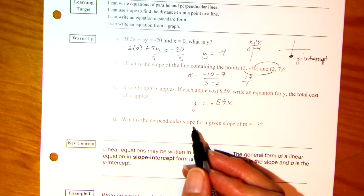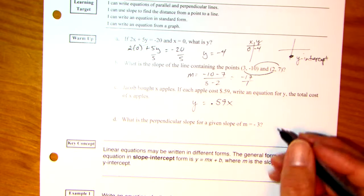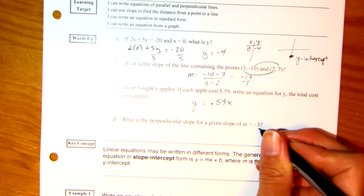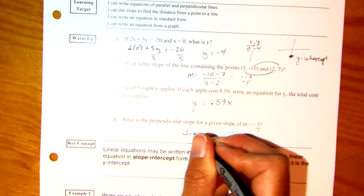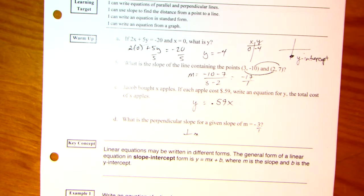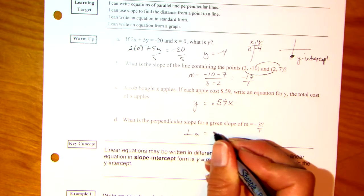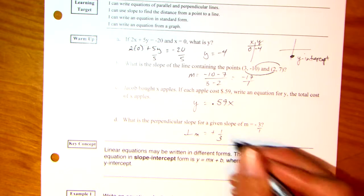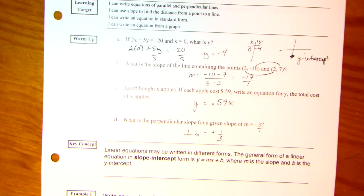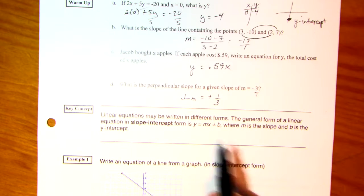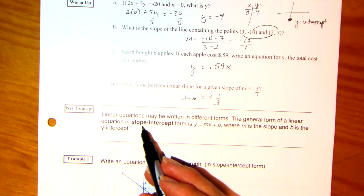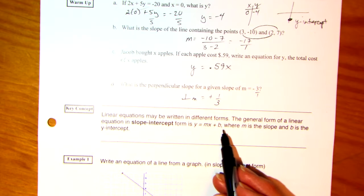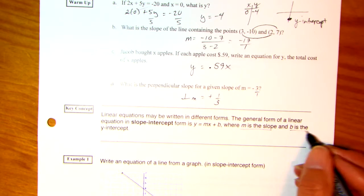What is the perpendicular slope if the given slope is m equals negative 3? Remember, this is the same as negative 3 over 1. Perpendicular slope is the opposite reciprocal. Opposite means you change the sign and flip it. 1 over 3. So a positive 1 third. Alright, here we go. Linear equations may be written in different forms. The general form of a linear equation in slope-intercept form is y equals mx plus b, where m is the slope and b is the y-intercept. So here we go.